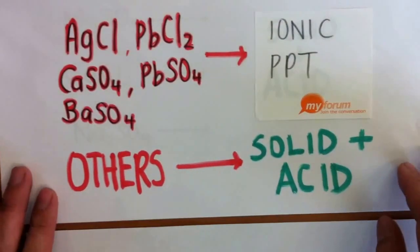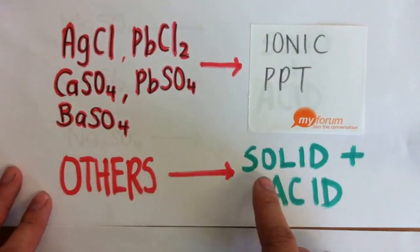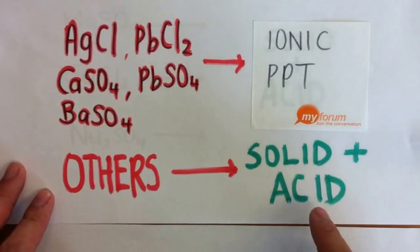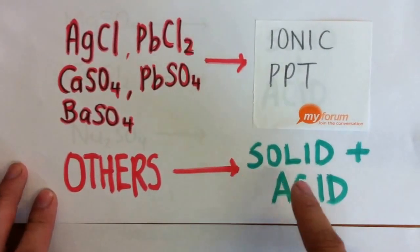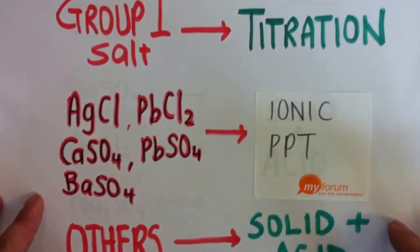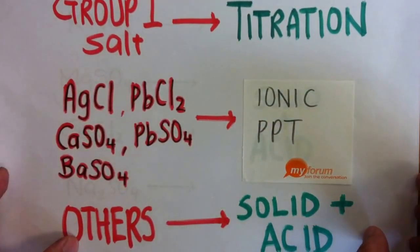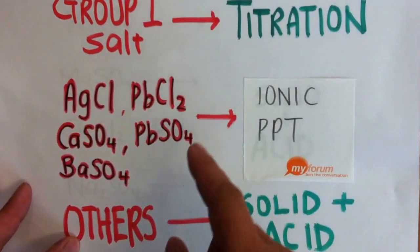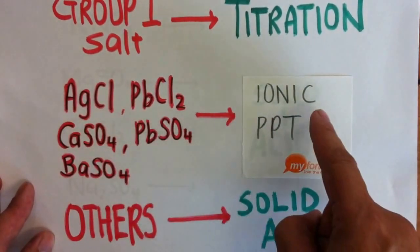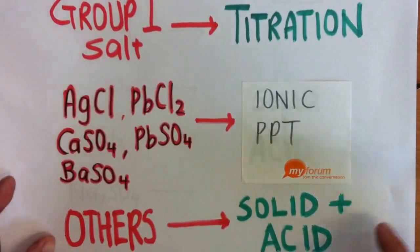Then what about the rest? In the case of the rest, you use the method of excess solids plus a fixed volume of acid. So these are basically the 3 methods of salt preparation. Go by this principle: group 1 uses titration, the 5 insoluble salts use ionic precipitation, and the rest use solid and acid.